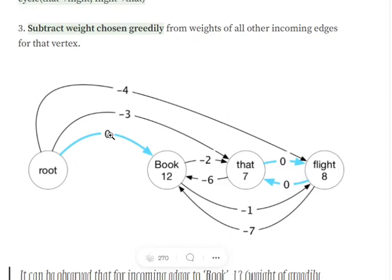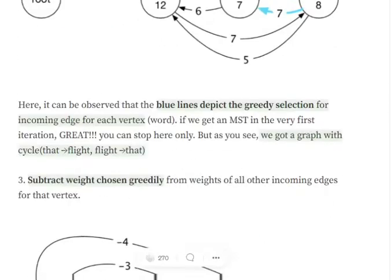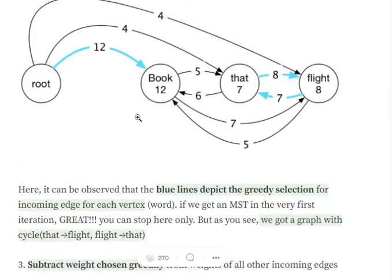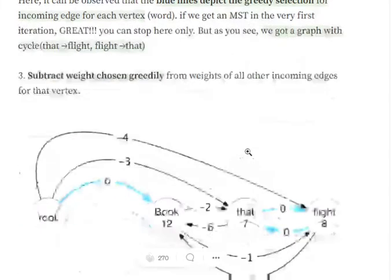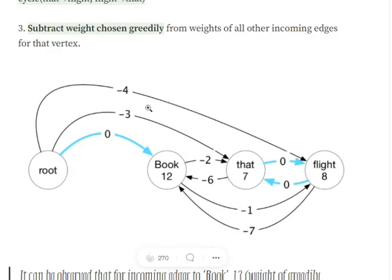Next, we subtract the highest weighted incoming edge from all other incoming edge weights for that node. For 'book', the maximum is 12, so: 12 minus 12 equals 0, 6 minus 12 equals minus 6, and 5 minus 12 equals minus 7. Similarly, for 'flight', the maximum is 8, so: 4 minus 8 equals minus 4, and 7 minus 8 equals minus 1. We do the same for 'that'.